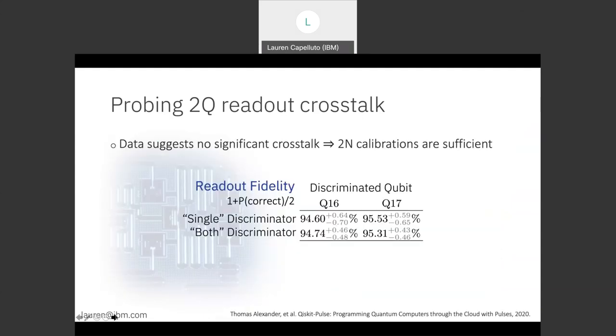As it turns out, the discriminator taking into account all of the data do not perform any better than the other one. This is good news. It suggests that there's no significant crosstalk between these two qubits. And although we can't make a claim about the entire device based on only two qubits, it's still evidence that we may be able to do a linear number of calibrations.